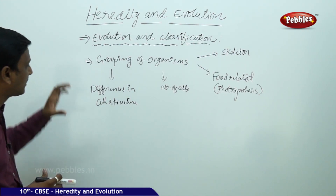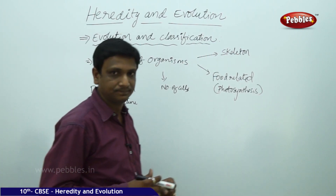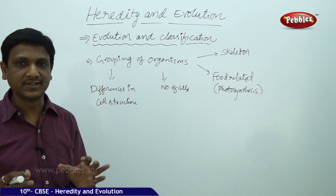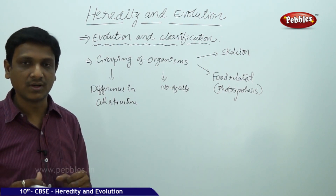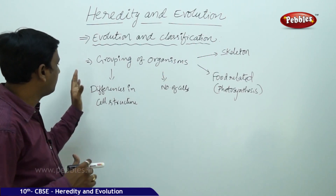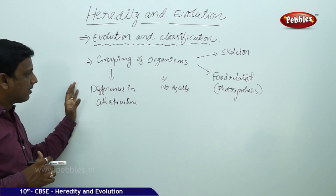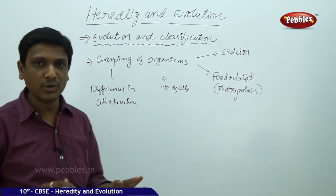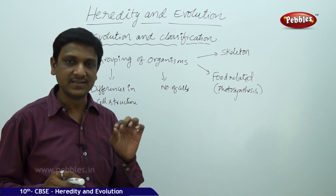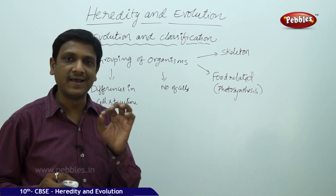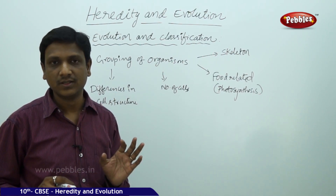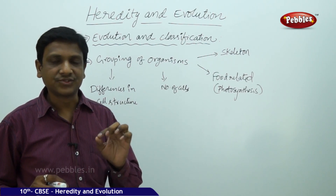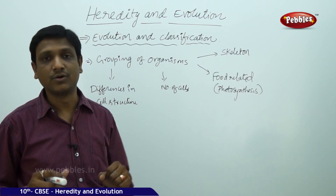Classification is based on so many characteristics — various features are used to group organisms. Primarily, organisms are classified depending upon their cell structure. We know that all living organisms are made up of cells, and the cell is the basic structural and functional unit of life.